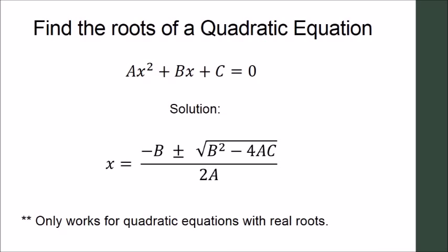We can find the roots of a quadratic equation, ax squared plus bx plus c equals 0 by the quadratic formula, which is x is equal to negative b plus or minus the square root of b squared minus 4ac all over 2a.